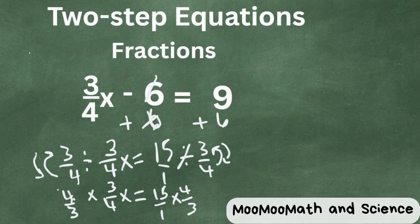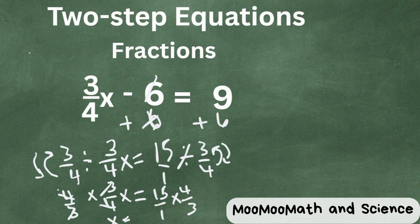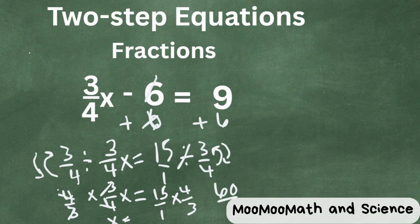The fours cancel, the three cancel, and it leaves us with x on this side. And then 15 times 4. So 15 times 4 is 60, and 3 times 1 is 3. 60 divided by 3 is 20. So x equals 20. There we go.